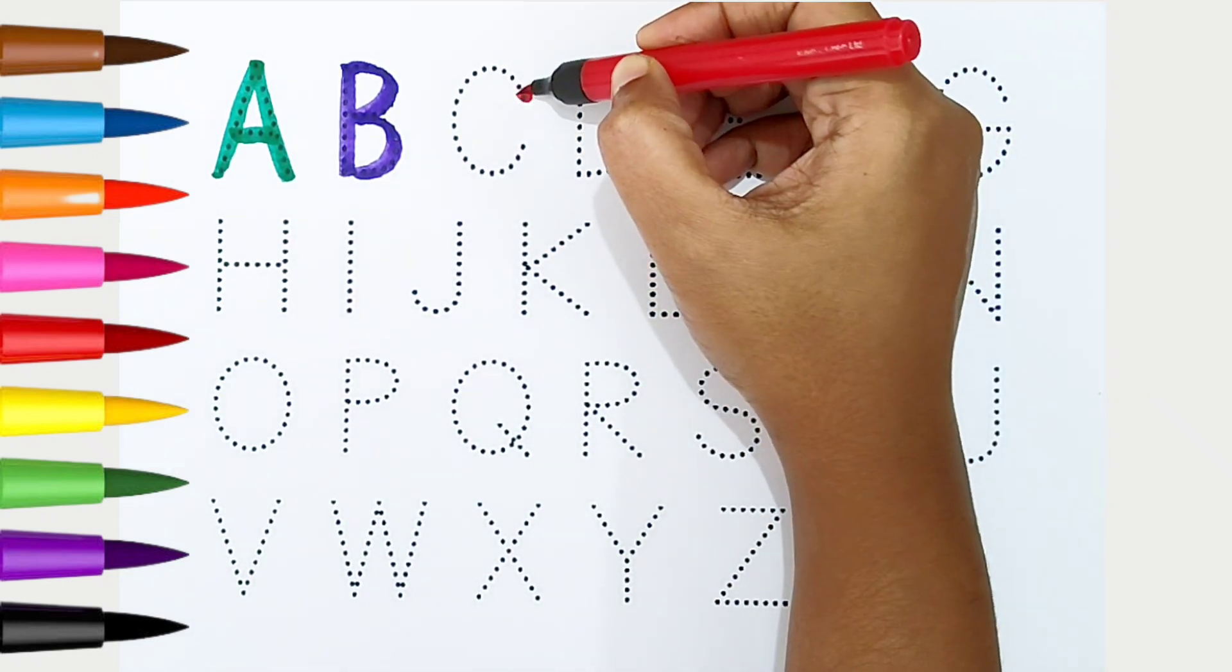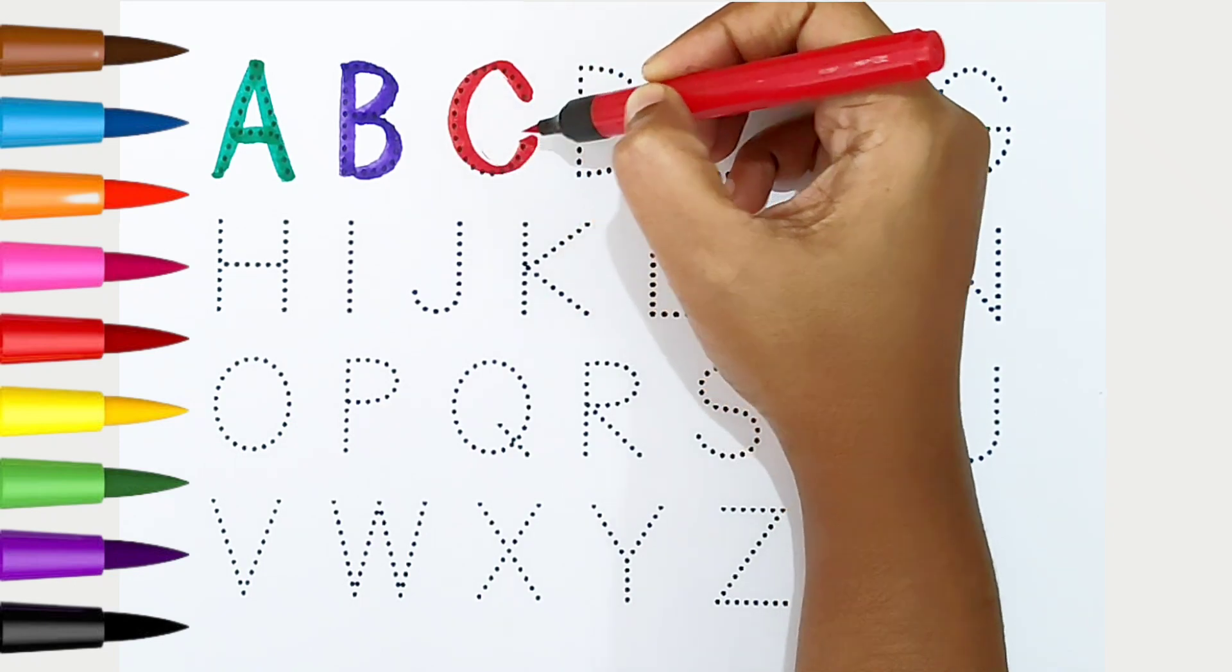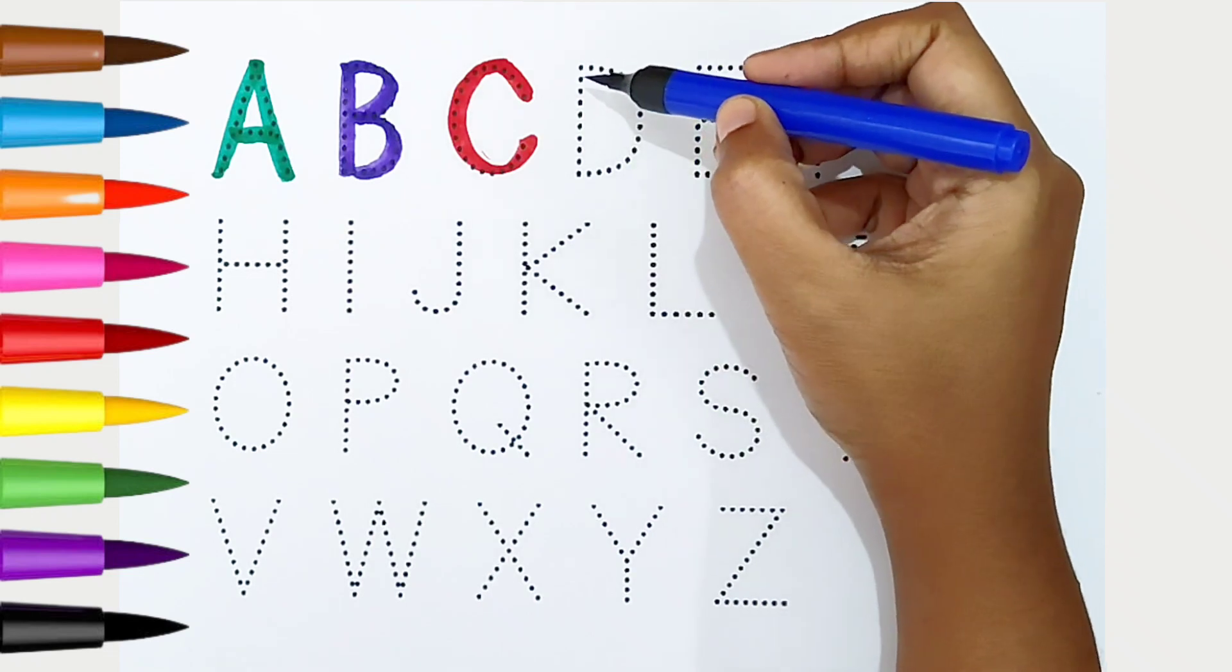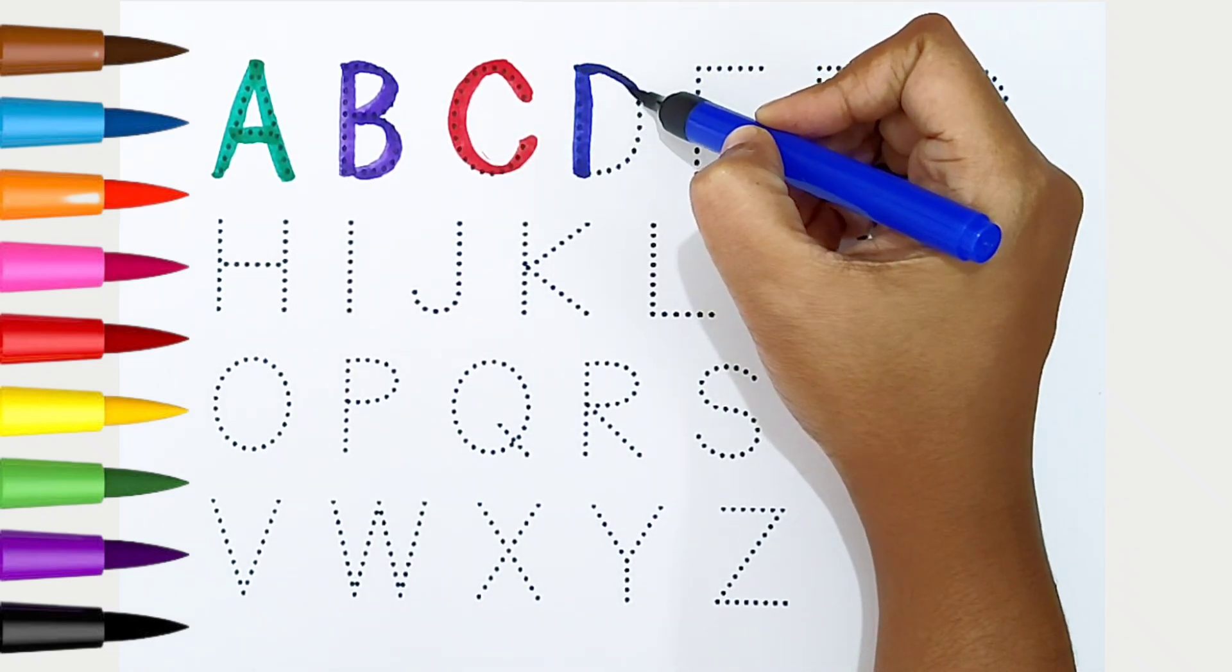C, red color. C is for cat. D, blue color. D is for donkey.